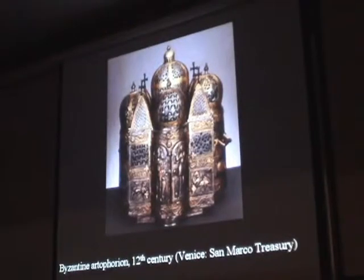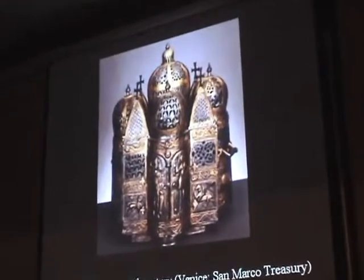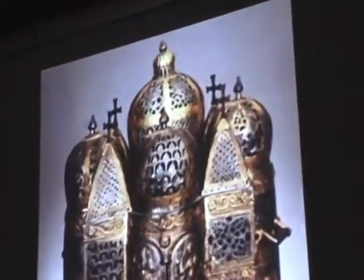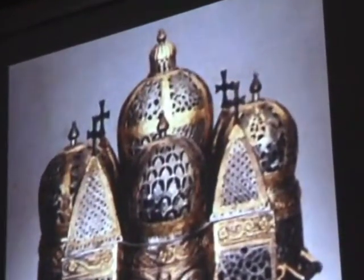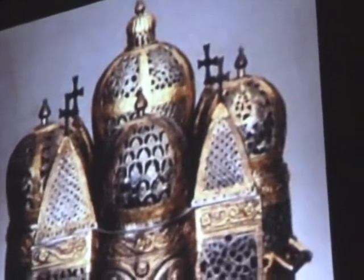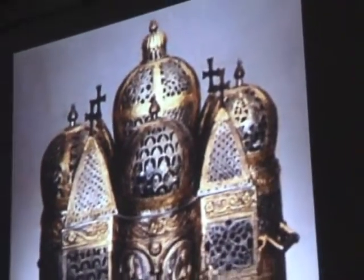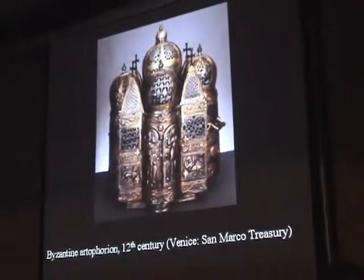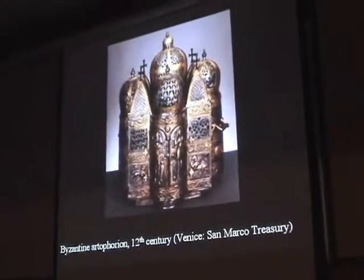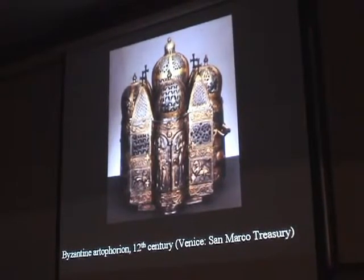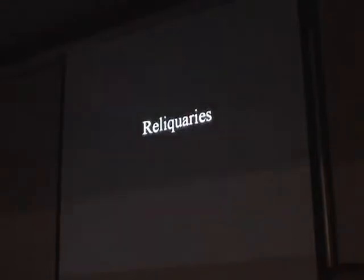I'm showing one example from the Byzantine world: a probably 12th century censer — or artoforion, a container for Eucharistic wafers — from Byzantium, now in the treasury of San Marco, in the shape of a building. This gives us some kind of context for understanding our model at Akhtamar.